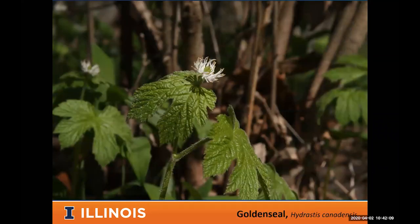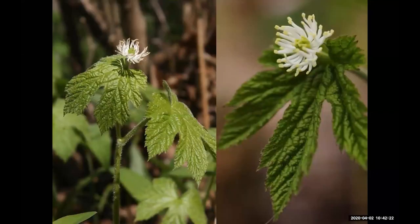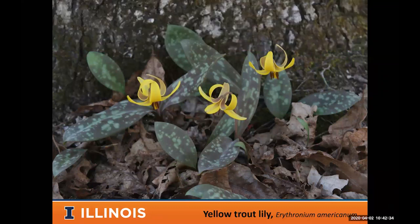Another early spring wildflower I really like is goldenseal — a really good indicator of a high-quality site. If you have a lot of goldenseal, you know you're in a relatively intact site. It has an unusual flower, and once the flowers ripen into fruit, you get a dark red fruit nestled into the leaf — even later in the year it's a beautiful plant.